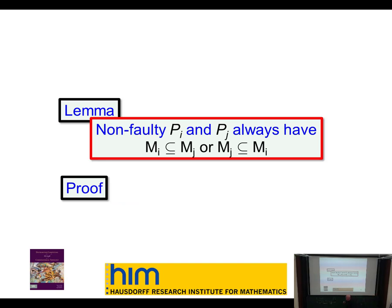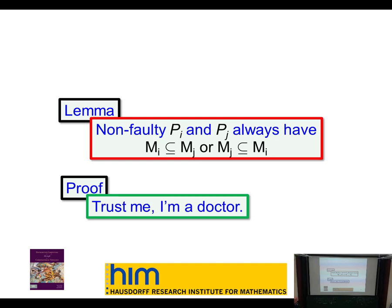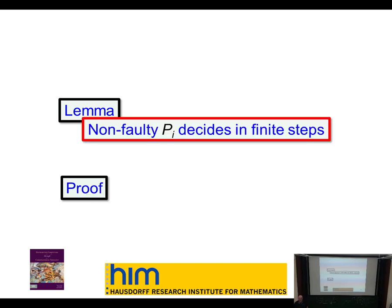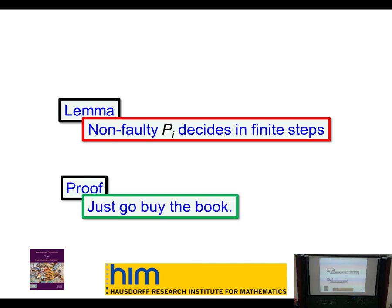We need to show that everybody's decisions are totally ordered. The lemma says: if Pi and Pj are non-faulty, then it's always the case that their tentative values are ordered by inclusion, one way or the other. We also need to prove that a non-faulty process always decides in a finite number of steps — Byzantine processes would like nothing better than to have you run forever. They are very clever about figuring out what would confuse you the most, but nevertheless they can't do that: you always converge to a correct answer after a finite number of rounds. The arguments are inductive.